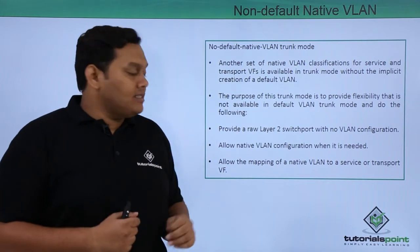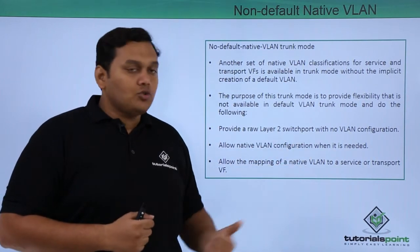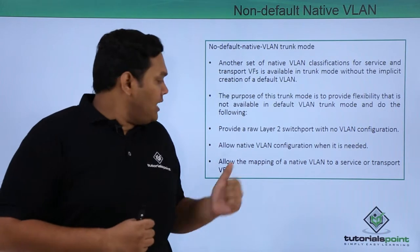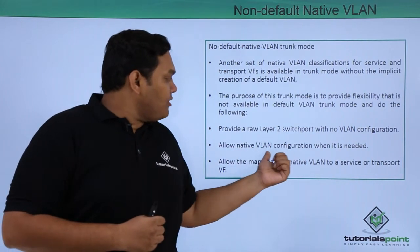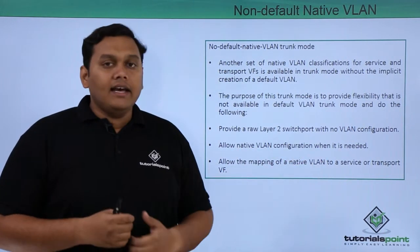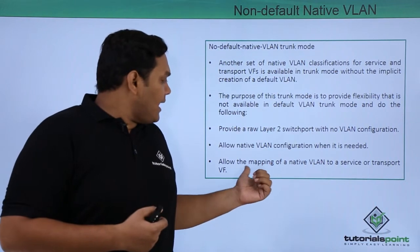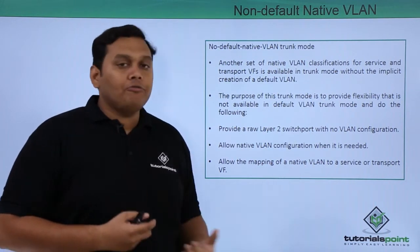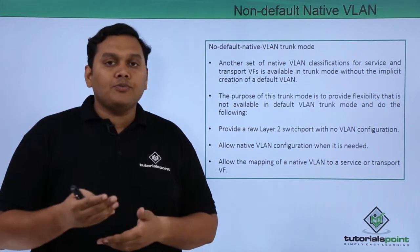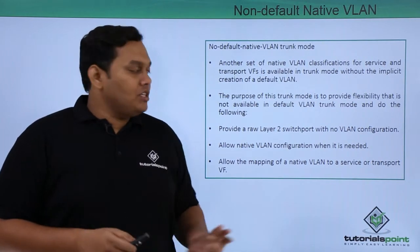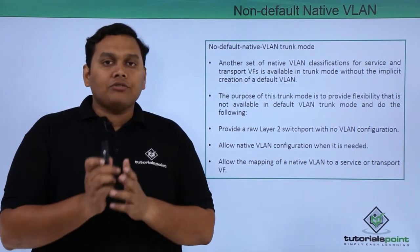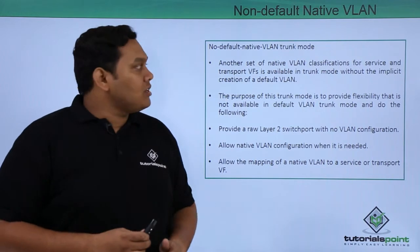The following things describe the purpose of this mode: providing a raw layer to switch port with no VLAN configuration, allowing native VLAN configuration when it is needed, and allowing the mapping of native VLAN to a service or a transport virtual fabric. These are the purposes of this VLAN in trunk mode.